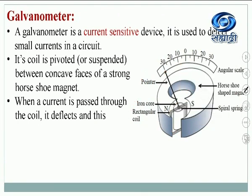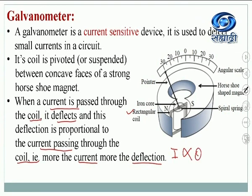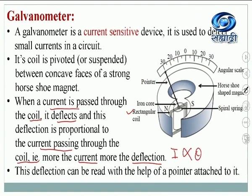When current is passed through the coil of the galvanometer, the coil deflects, and the pointer gives us the deflection. This deflection is proportional to the current passing through the coil — more the current, more the deflection. That is, I (current) is proportional to theta (deflection). This deflection can be read with the help of the pointer attached to the galvanometer.